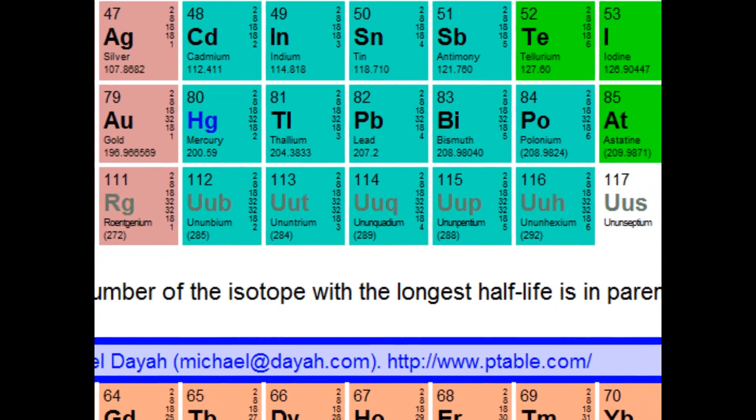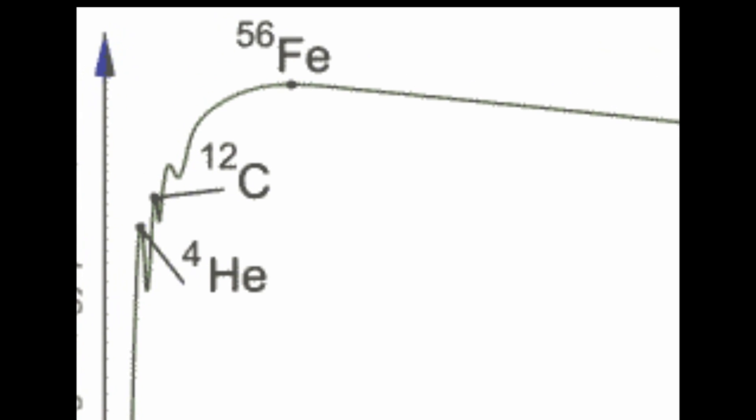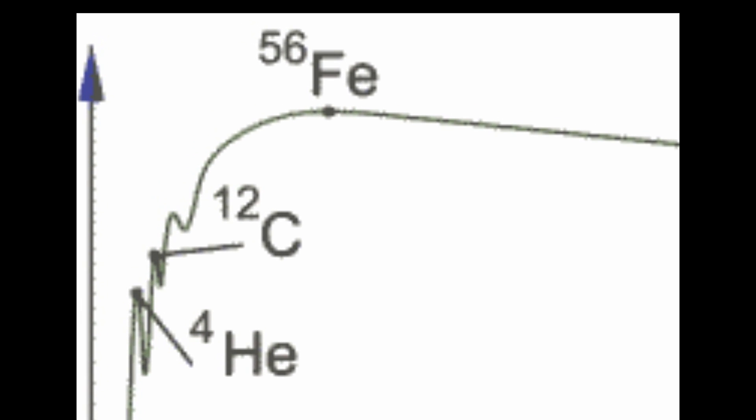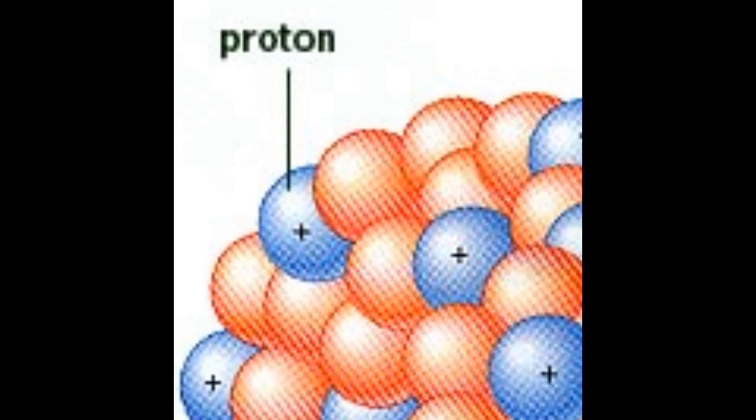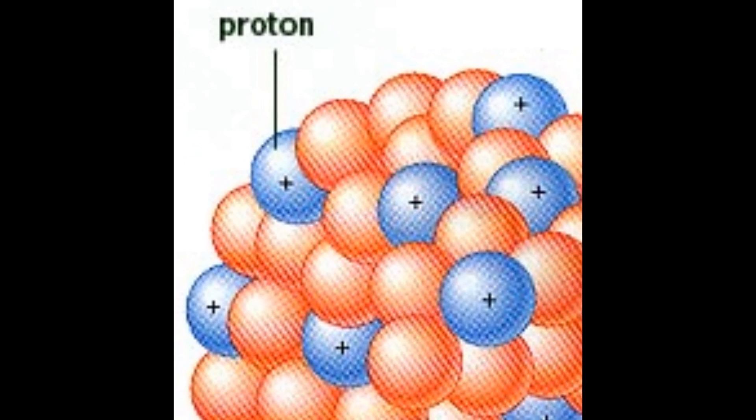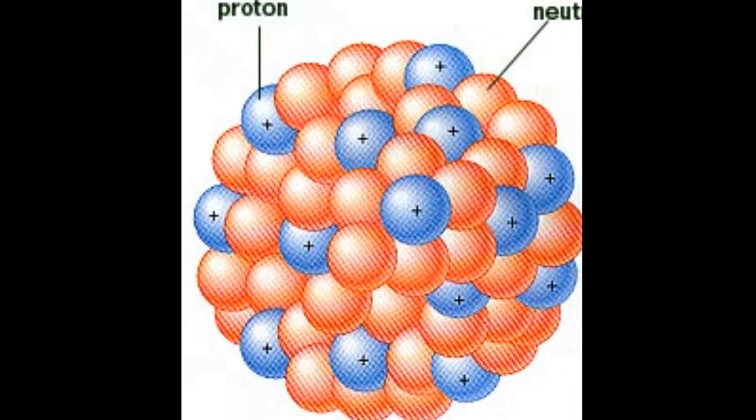There are two reasons for this. Fusion of elements heavier than iron absorbs energy instead of releasing it, and so this is a thermodynamically unfavorable process. Also, since elements heavier than iron have lots of protons in their nuclei, their nuclei would have a large positive charge and thus repel each other so much that the temperature would have to be unrealistically high for fusion to happen.